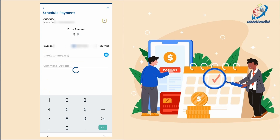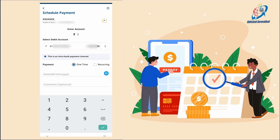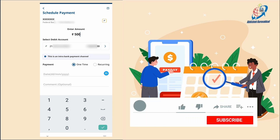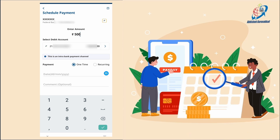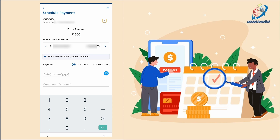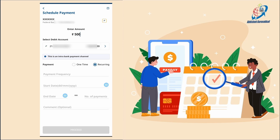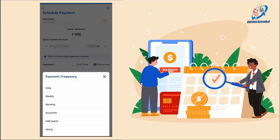We will enter the amount of the transfer and select a debit account. There will be a recurring option — I will choose and click the recurring option. The next step is the payment frequency. If you click on payment frequency, it will be available for daily, weekly, monthly, quarterly, half-yearly, and yearly.